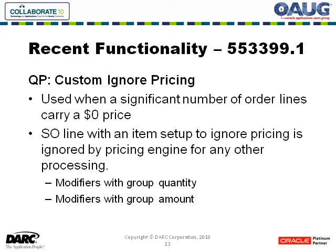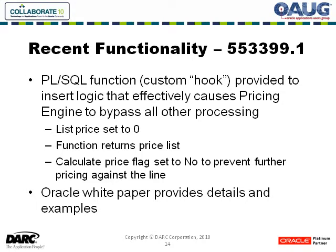One condition that needs to be considered is that any modifiers that do either quantity grouping or amount grouping — lines included in this functionality will be ignored. There's more detail about that in the note. What's provided is a PL/SQL function that just exits and does nothing, and you need to provide the logic that will tell the pricing engine to price this line at $0. You provide the conditions — it can be any logic you can put in a normal PL/SQL function — and if the line and item are to be priced at $0, you return the $0 price.